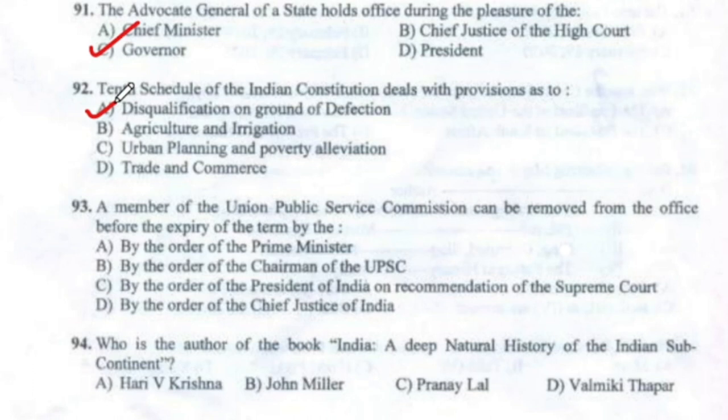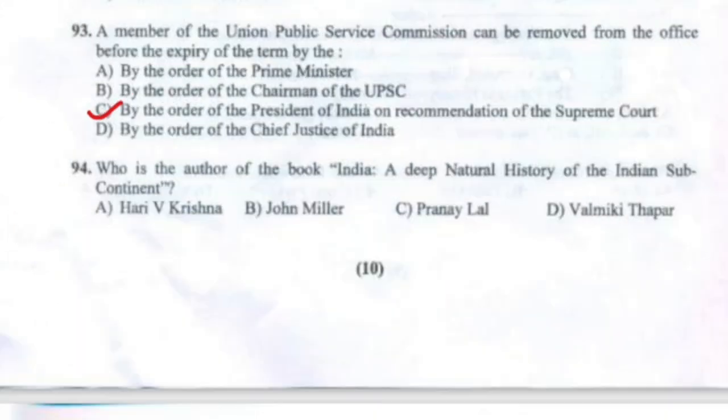Question 93: A member of the Union Public Service Commission can be removed from office before the expiry of the term by Option C — by the order of the President of India on the recommendation of the Supreme Court.